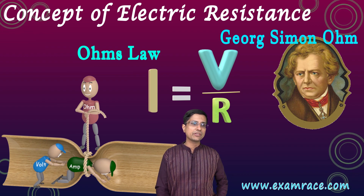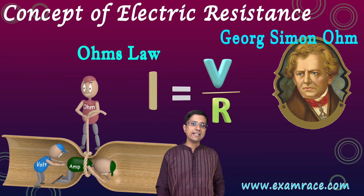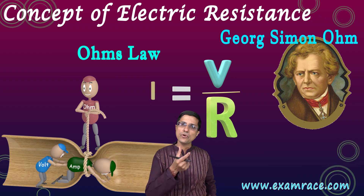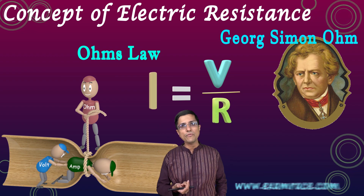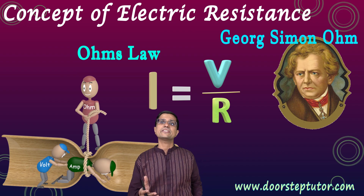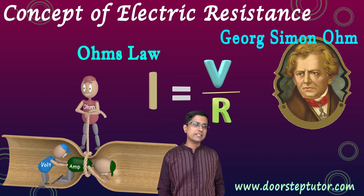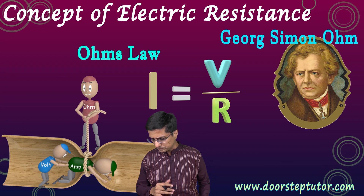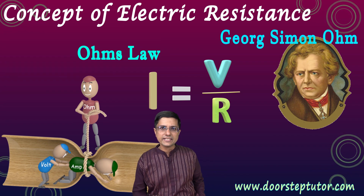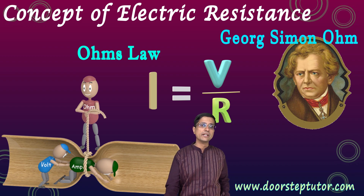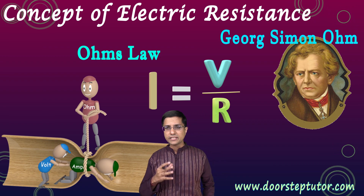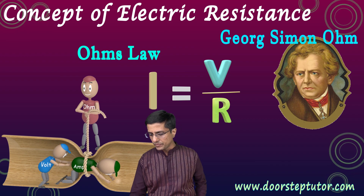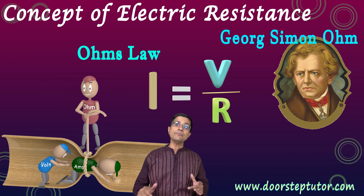This is what the equation is also telling us: as I increase the voltage, the current increases; as I increase the resistance, the current decreases, because resistance is trying to stop the flow and voltage is trying to drive the flow of electrons. I is the current, V is the voltage, and R is the resistance. This equation — I = V/R — Ohm's Law, is very very important.